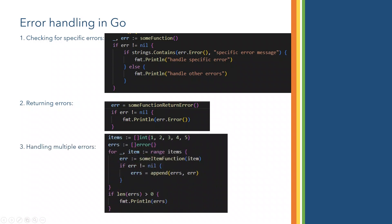The third type is handling multiple errors. For example, you have multiple items in a slice, array, or map that you need to process with some handler function. If something goes wrong for a particular item, you return that error and append all errors into a slice of errors. Once all items are processed, you take appropriate action on those multiple collected errors.